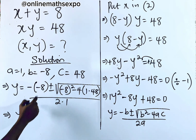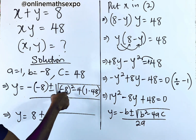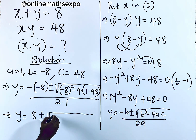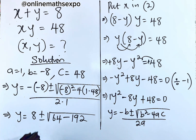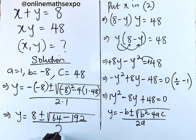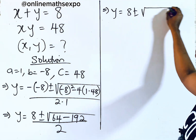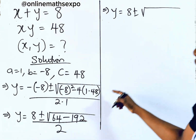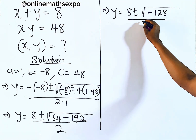So if you keep solving, we have Y equals 8 plus or minus the square root of: negative 8 squared is negative 8 multiplied by itself, giving us 64. Then when you multiply 4 times 1 times 48, it gives us 192 — so we have 64 minus 192, which gives us negative 128 — divided by 2.